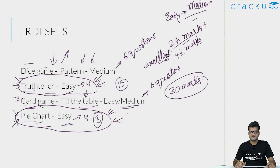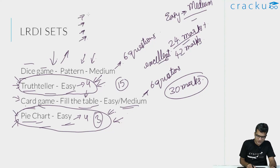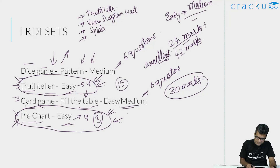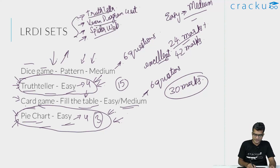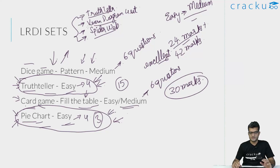In general, what I would suggest for someone preparing for CAT is that there are a few types of sets you should definitely know how to solve. One is the truth teller type I just discussed. Another is a four-set Venn diagram. The next one is a spider web. These are quintessential question types that are often asked — at least one set comes from one of these topics every two or three years. So you should have a thorough understanding of how to solve these types of sets. Once you know the method, you will easily get all the sets correct in those particular topics. I hope this analysis was useful for you.